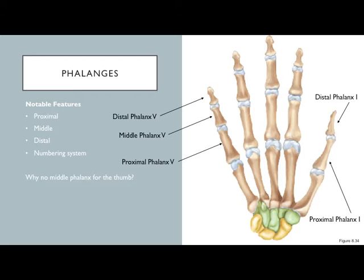Phalanges are your finger bones, using the same one-through-five numbering from the thumb. Each finger has three phalanges: proximal, middle, and distal. A 'phalanx' is the singular form. For example, people typically wear a wedding ring on the proximal phalanx of finger four — you could even specify left hand.